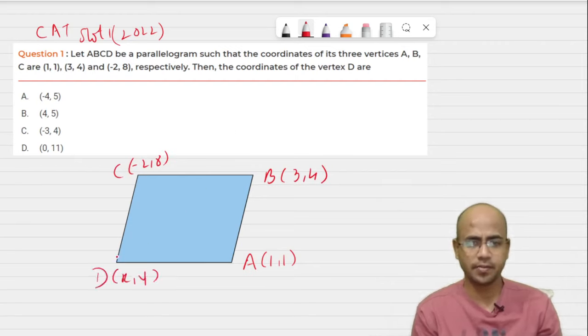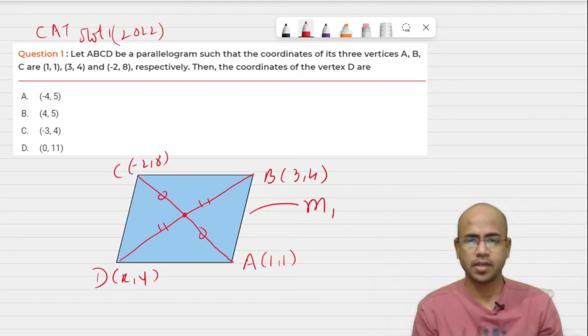Now we know D to be found out as (x,y). Now if I draw the diagonals of a parallelogram, they bisect each other and they intersect each other as we know, so therefore this is going to be the midpoint.